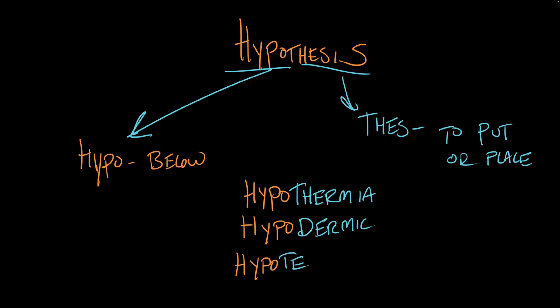Or the geometry term hypotenuse, which comes from hypo and a root that means to stretch. If we put the right angle of this right triangle here up top, the hypotenuse stretches below it from one end to the other. A hypotenuse stretches below the right angle.